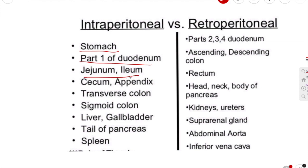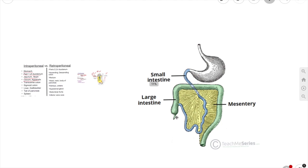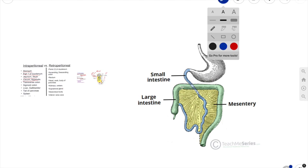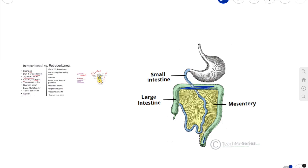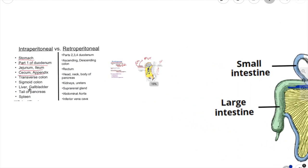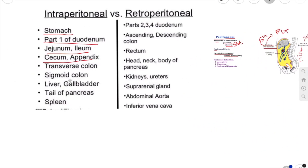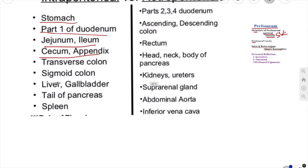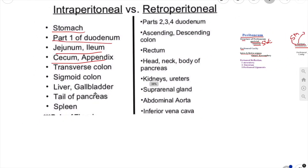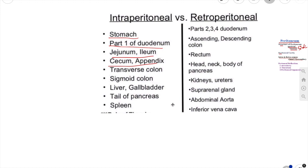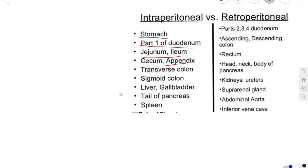Your jejunum and ileum, your cecum and appendix, your transverse colon, and your sigmoid colon are all intraperitoneal organs. Your liver and beneath the liver the gallbladder are both intraperitoneal. The tail of the pancreas and the spleen are also intraperitoneal.